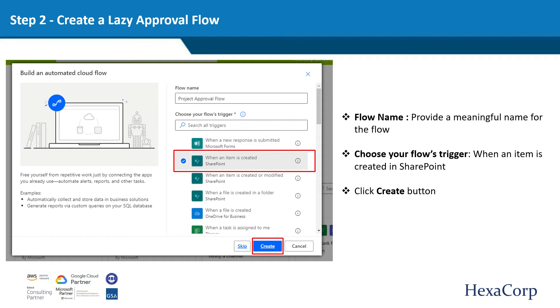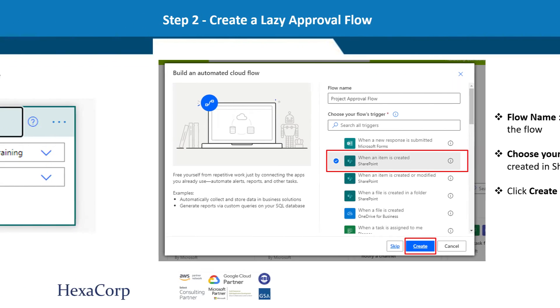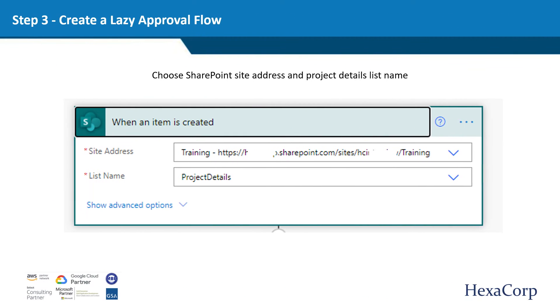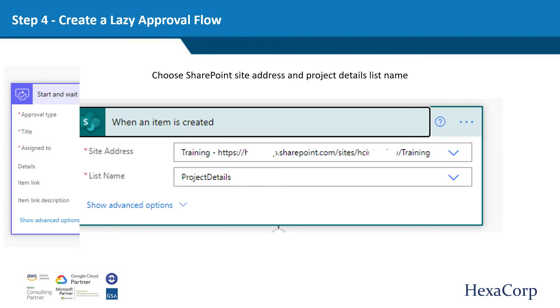Fill in the below details for the SharePoint connection. Site address: the address of the SharePoint site where the project details list exists. List name: the name of the project details list.